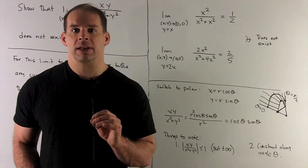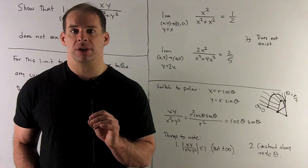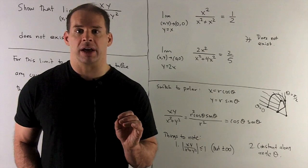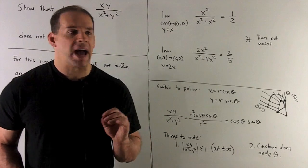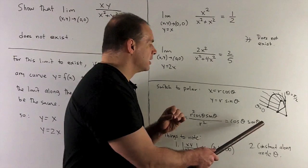To get a better idea of what's happening, let's switch to polar coordinates. So x = r cos(θ), y = r sin(θ). We stick into our function. When we simplify, we get cos(θ)sin(θ).